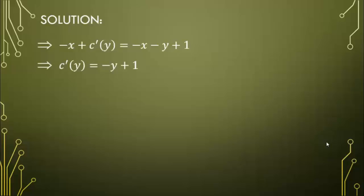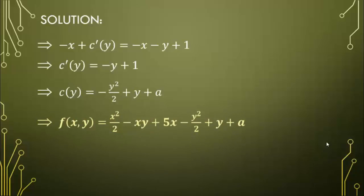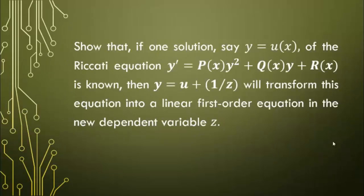Integrating both sides gives C(y) = −y²/2 + y + a. Therefore, the solution function becomes x²/2 − xy + 5x − y²/2 + y + a. So that if one solution, say y = u(x), of the Riccati equation y' = p(x)y² + q(x)y + r(x) is known, then y = u + 1/z will transform this equation into a linear first-order equation in the new dependent variable z.